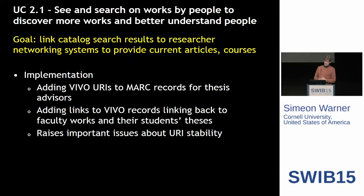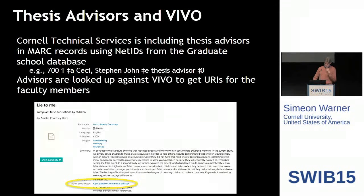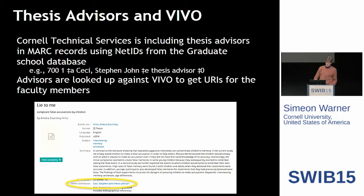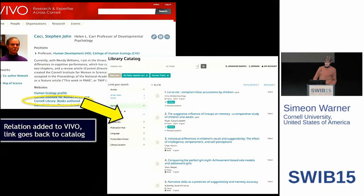Another use case was how we use linked data to demonstrate better discovery in ways that wouldn't work within the traditional string-based catalog. One example is the notion of thesis advisors. It happens that our graduate school collects information about the thesis advisor, and typically we've thrown that information away. Now we're at least starting to put that into our main catalog when we catalog the thesis. We add to Vivo, our profile system at Cornell, information about the fact that a particular faculty member has written a book or been a thesis advisor, and we can link that back to the catalog.